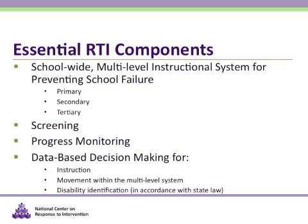As you saw in the definition, the Center has identified four essential components for RTI. The first is screening, or a system for identifying students at risk for poor learning outcomes. The second is progress monitoring, or a system for monitoring the effectiveness of the supports provided to students. The third is a multi-level prevention system, or at least three increasingly intense levels of instructional support. Those levels are primary, which is the core instruction and curriculum.